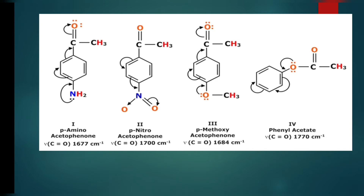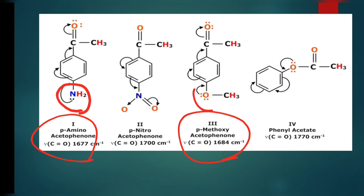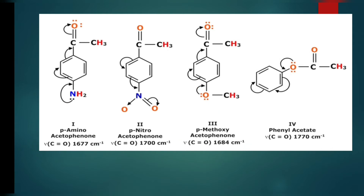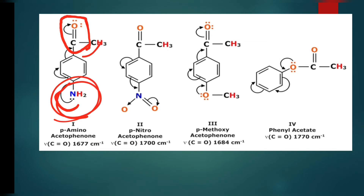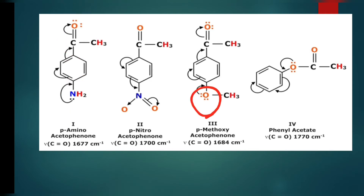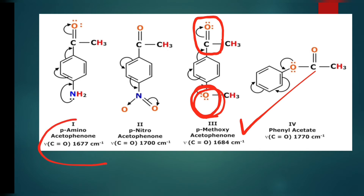Comparing compounds one and three versus two and four: nitrogen in compound one is less electronegative and can easily disturb the carbonyl double bond, decreasing vibrational frequency. Oxygen in compound three cannot donate electrons as easily, causing less disturbance to the C=O character, resulting in a higher vibrational frequency. Compound one thus shows a decreased vibrational frequency while compound three shows an increased one.